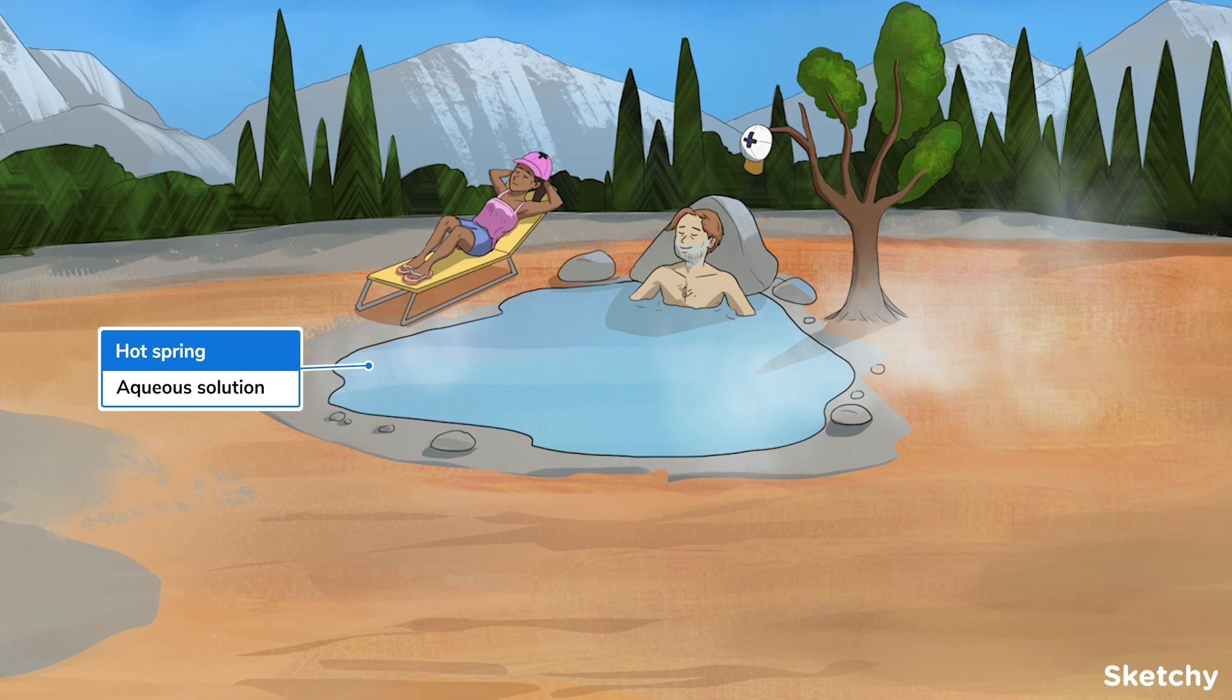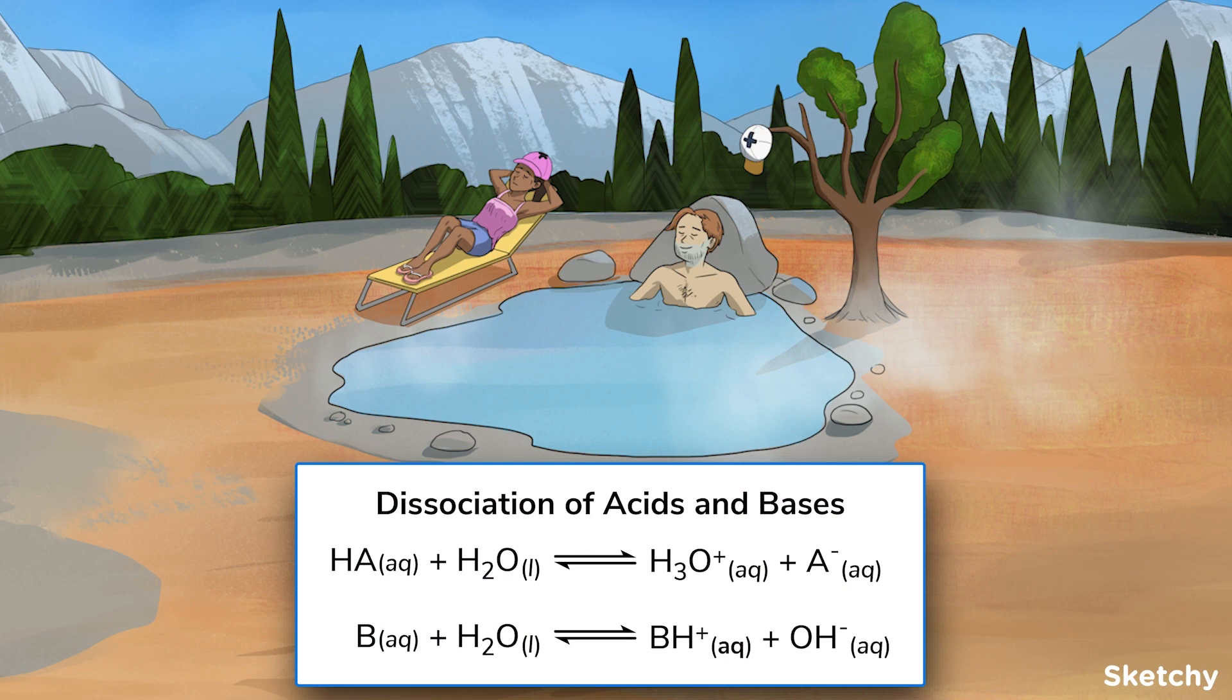Dissociation is the breaking apart of a compound into ions in an aqueous solution. Dissociation of acids and bases, according to the Bronsted-Lowry definition, always involves the transfer of a hydrogen ion, which is really just a proton. The result is an anion and a cation.